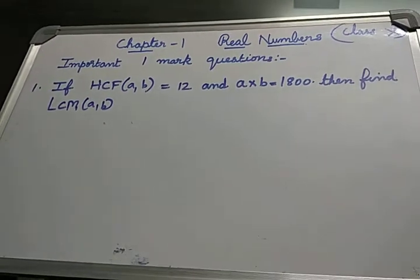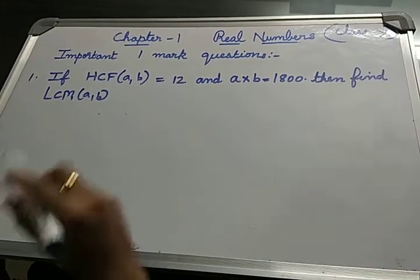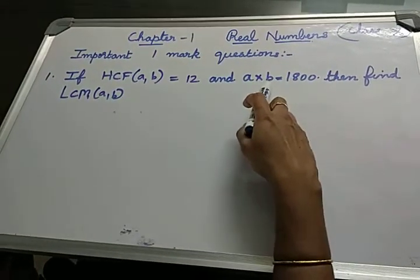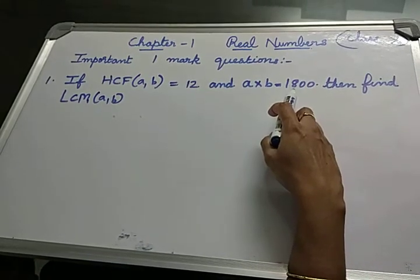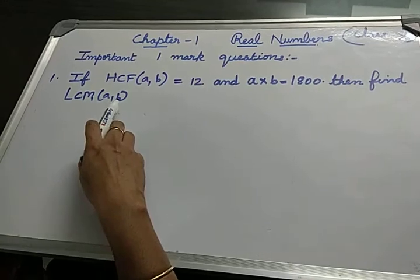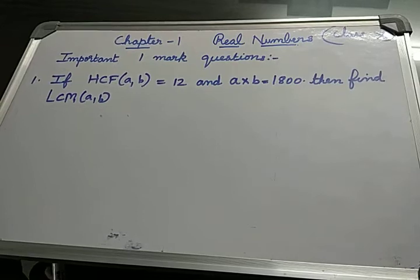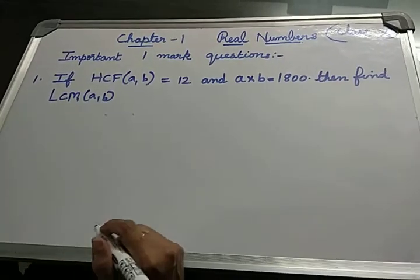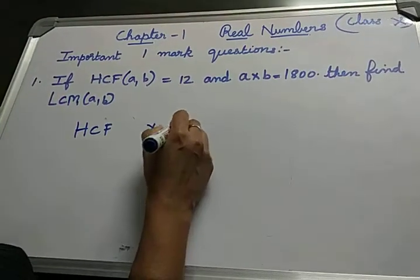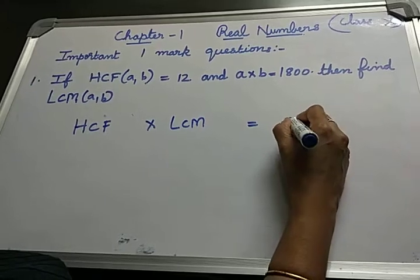The first question is: If HCF of A and B equals 12 and A into B equals 1800, then find the LCM of A and B. Don't get scared - this is very simple. We've studied the relation: HCF into LCM is nothing but the product of numbers.